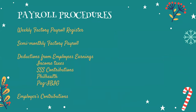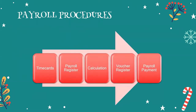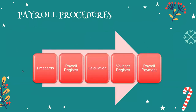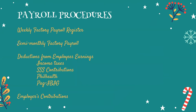Let's continue with payroll procedures. For factory labor, payroll is typically weekly. For supervisors and managers, it's usually monthly. Whether weekly or semi-monthly, it follows the same payroll flow and procedure.